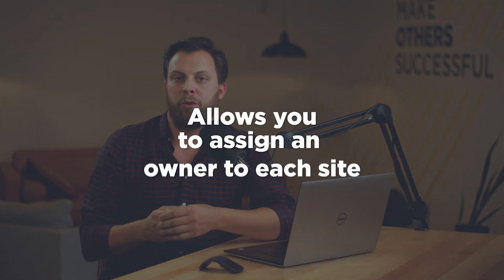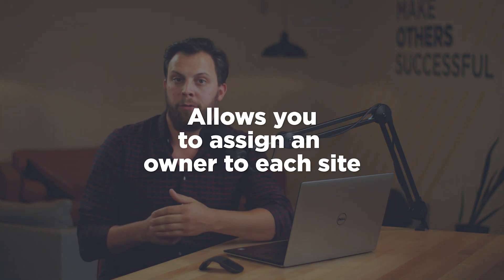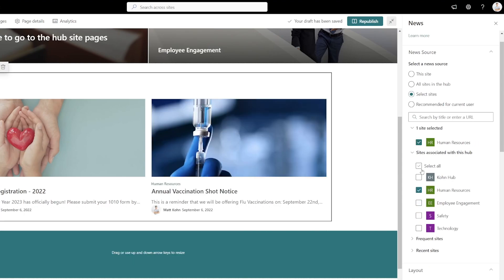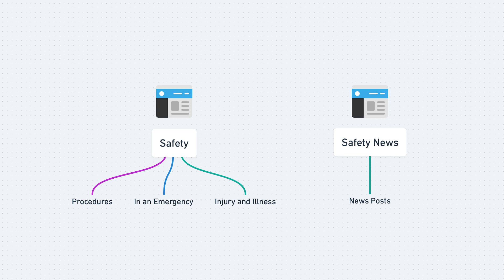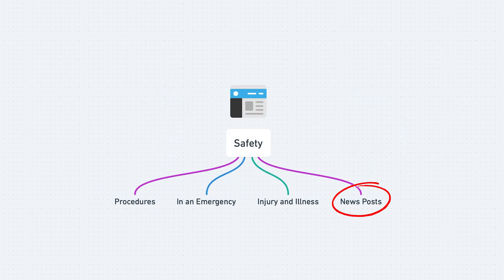A few reasons you want to do it this way: creating a site allows you to assign an owner to that site if you have different news owners creating different categories of news. And even if you have the same owner creating news across multiple sites, you'll be able to roll up and refine by those categories based on the site they come from. For example, a safety site can manage both the safety news and be a resource for safety policies and other content related to the safety department, and it's really nice that the safety owner can manage all of this content in one area.